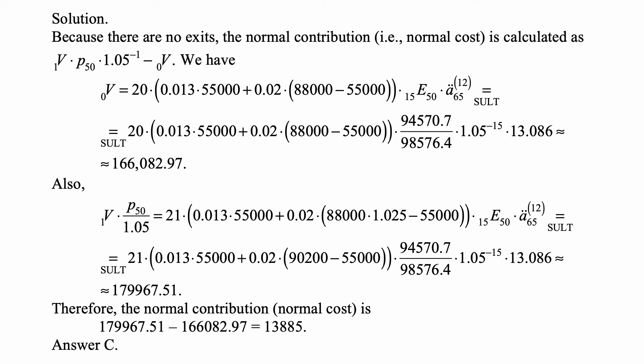the accrued liability at time 1, which using the notation from the textbook is basically just written as a reserve at time 1, times P50, times 1.05 to a negative 1, minus 0V, so accrued liability at time 0 at the beginning of the year.